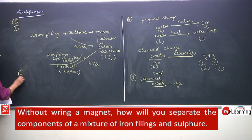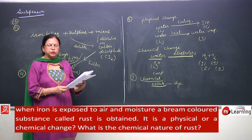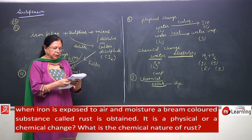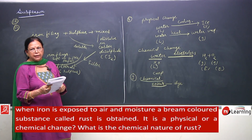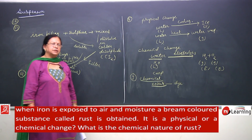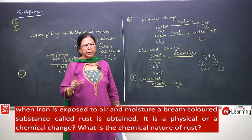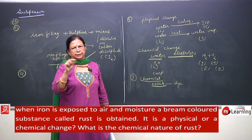Problem 12: when iron is exposed to air and moisture, a brown-coloured substance called rust is obtained. Is it a physical or a chemical change? What is the chemical nature of rust? This is a very common experience — in the rainy season, iron things get rusted and you see a brown layer.